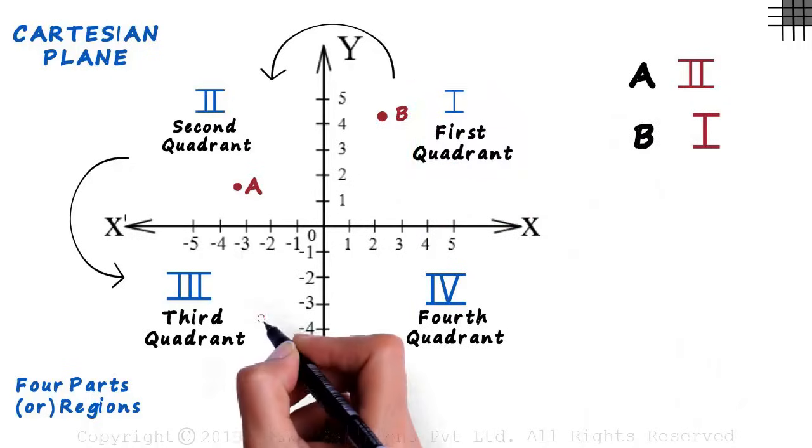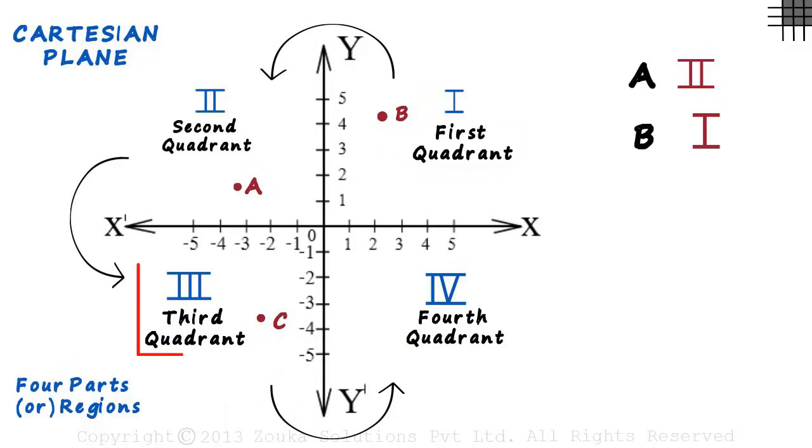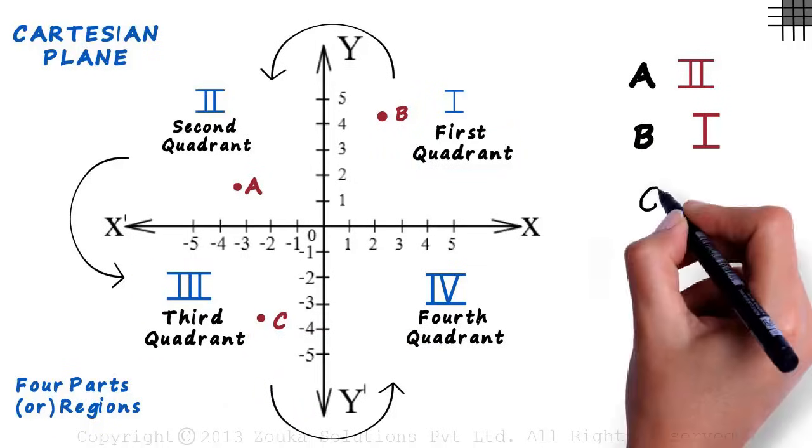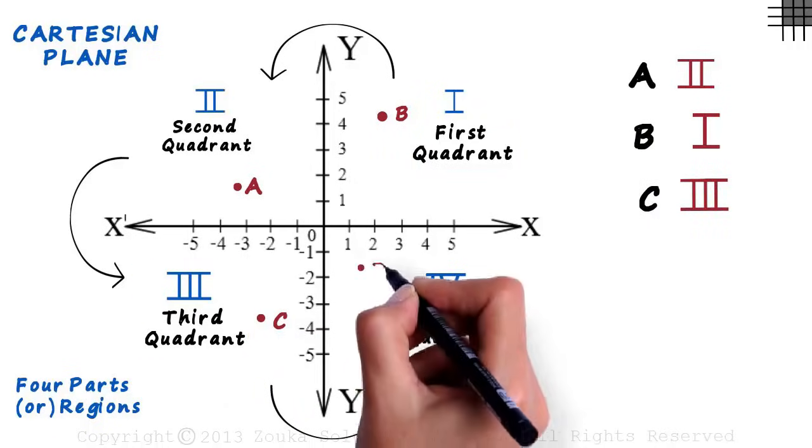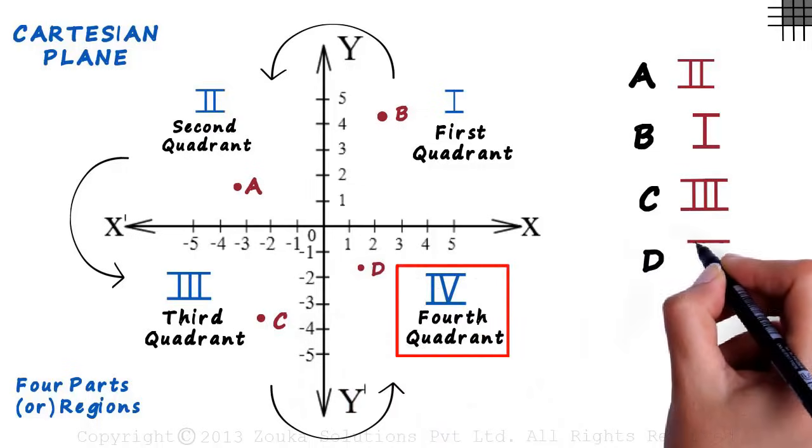Point C is marked here, as it lies in the third quadrant. We write C3. And this is point D. It is in the fourth quadrant.